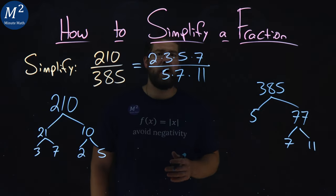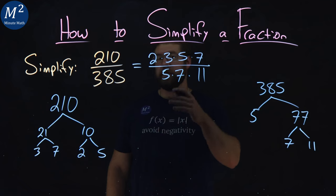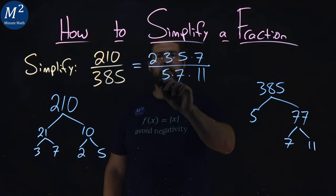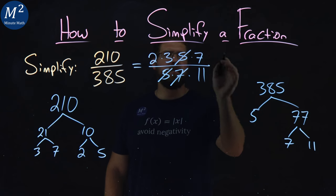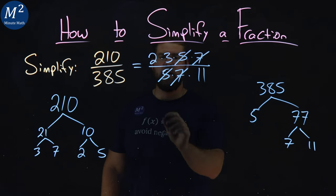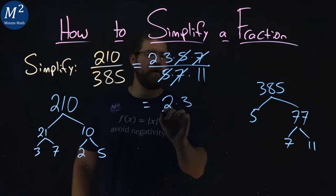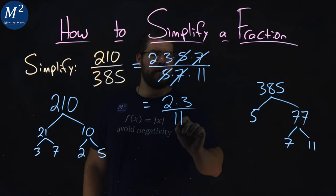From there, we want to cross off our common factors. I see a 5 in the denominator and the numerator, and I see a 7 in the denominator and the numerator. What's left is a 2 times 3 in the numerator and 11 in the denominator.